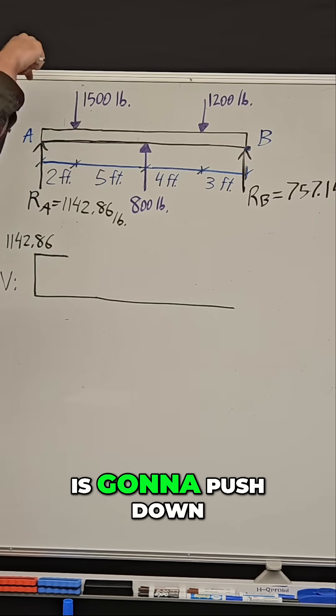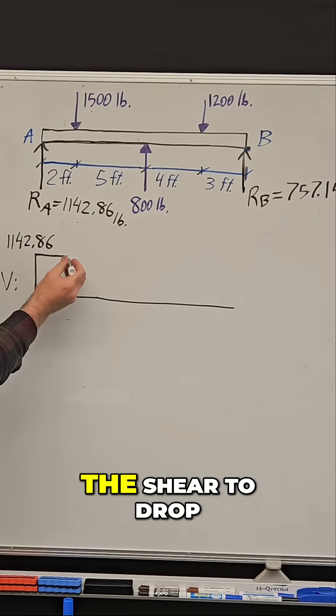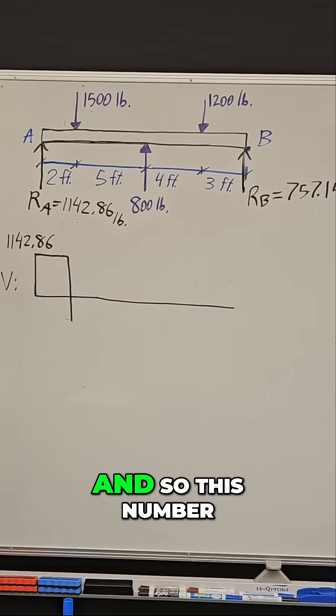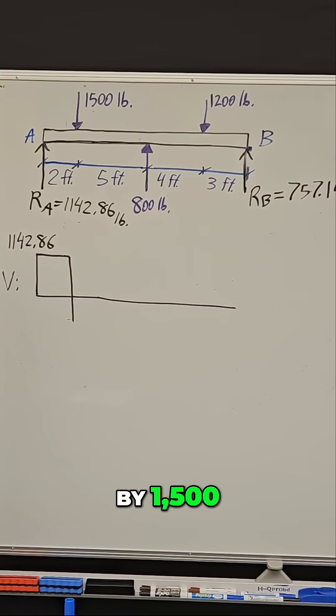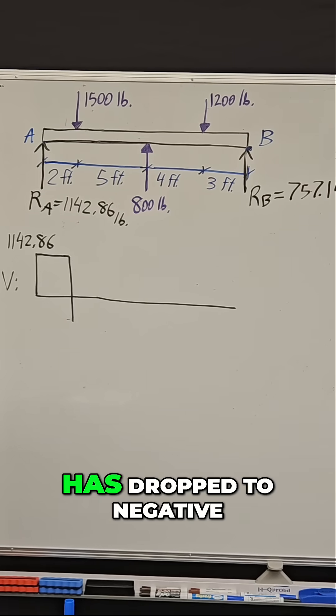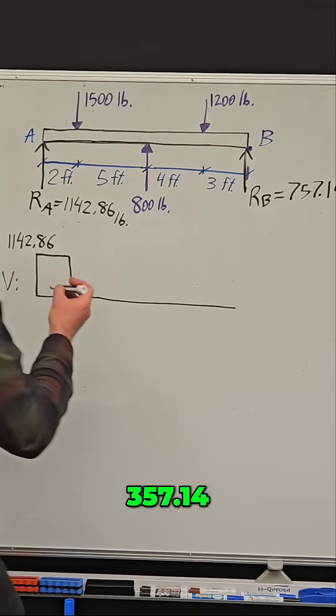That 1500 pound force is going to push down and cause the shear to drop. This number, 1142.86, will go down by 1500, so now the shear has dropped to negative 357.14.